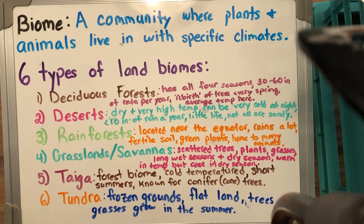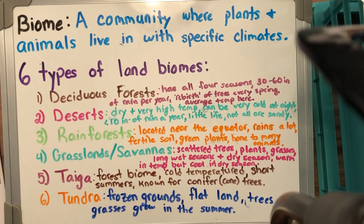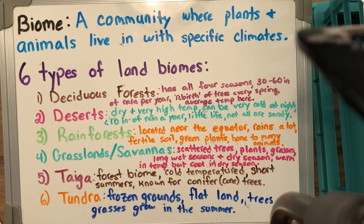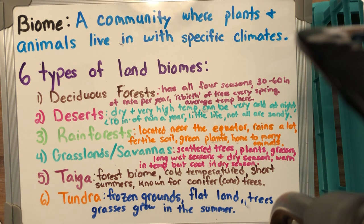Our next biome is called the taiga. The taiga is a forested biome — one of three forest biomes we have, along with the rainforest and deciduous forest. It has very cold temperatures but very short summers, meaning the winter months are longer than the summer months, like in Alaska and Canada. This biome is known for its conifer trees, which are cone trees and pine trees. You can find taigas across the world, especially in Russia where the biggest amount are found, and also in Alaska, Canada, and Scandinavia.